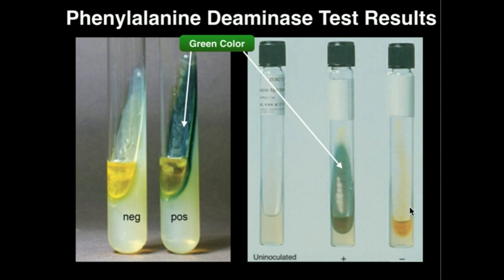Over here on the far right in this picture, this is a negative result. Over in the middle, we have a positive result because we have this dark greenish color. So that's how you identify the results for a phenylalanine deaminase test, and hopefully the theory behind that made a little bit of sense. Thank you.